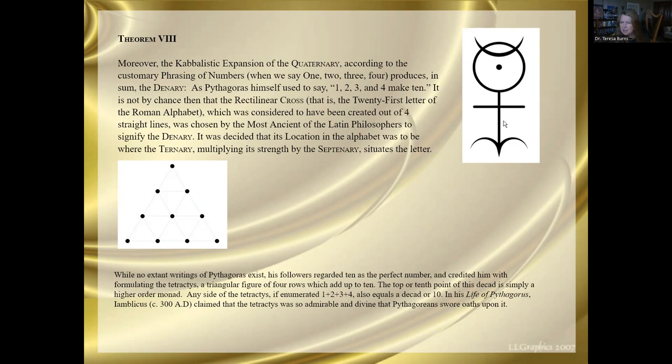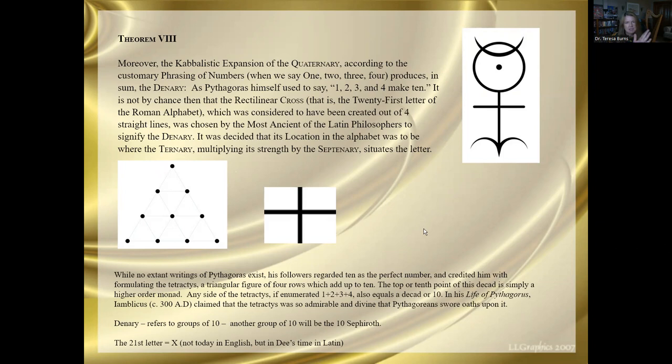Let's continue then. It is not by chance that the rectilinear cross here, and we've seen this as a symbol of the ternary and quaternary in earlier theorems. So he's saying this is the 21st letter of the Roman alphabet. What? If you count letters in our English alphabet, the 21st letter would be U. But he's not writing this in English. This is the translation that Dr. Turner and I did that came out in 2021 from Orboros Press of Latin. In the Latin of D's time, the 21st letter is X. So now that probably makes more sense. So you have the rectilinear cross, you tilt it 45 degrees, and you get an X. That's what he's talking about here.